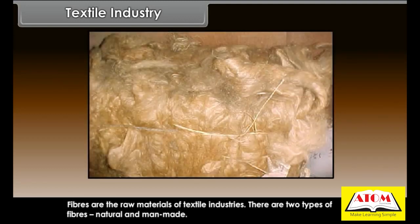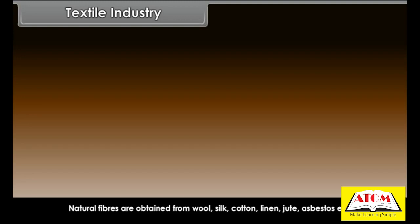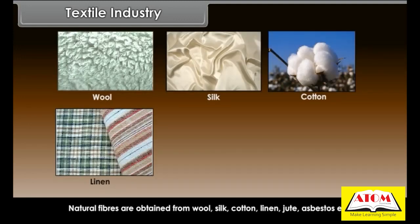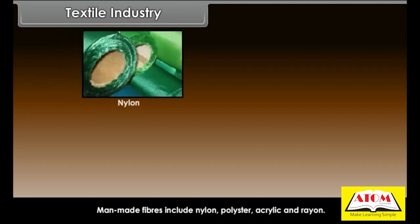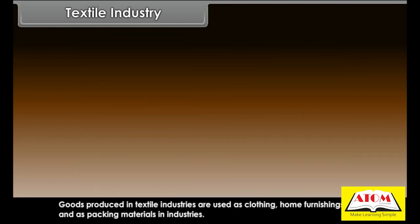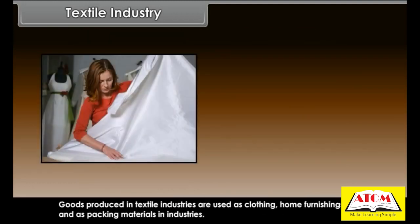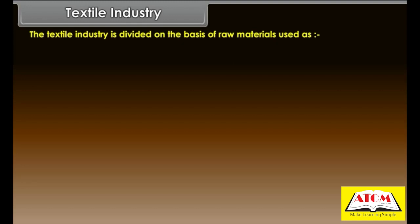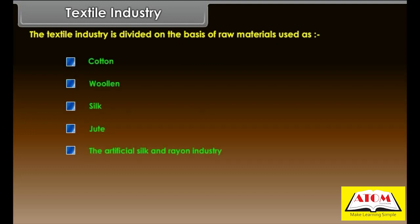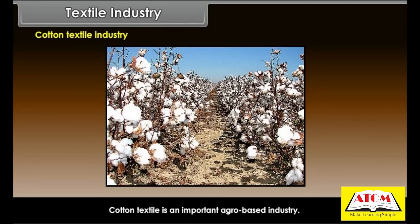Fibers are the raw materials of textile industries. There are two types: natural fibers such as wool, silk, cotton, linen, jute, and asbestos; and man-made fibers such as nylon, polyester, acrylic, and rayon. Goods produced are used as clothing, home furnishings, and packing materials. The textile industry is divided on the basis of raw materials into cotton, woolen, silk, jute, and artificial silk and rayon industries.